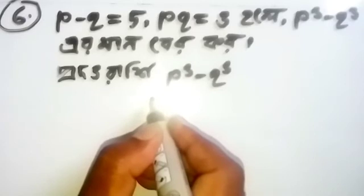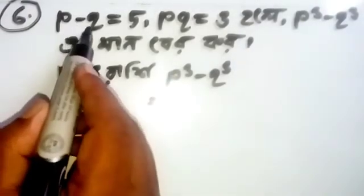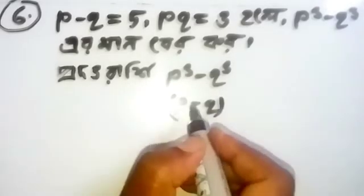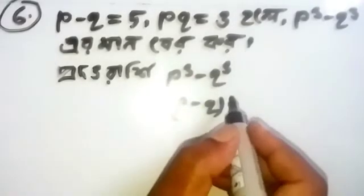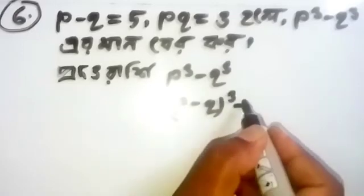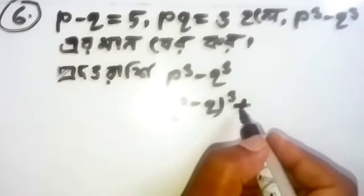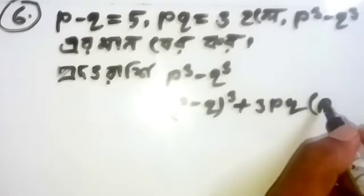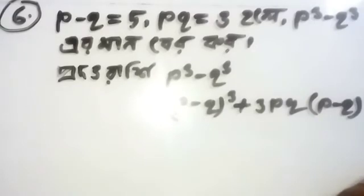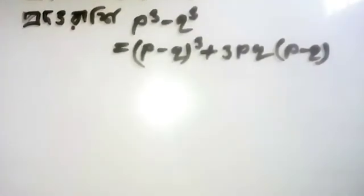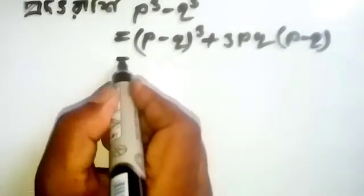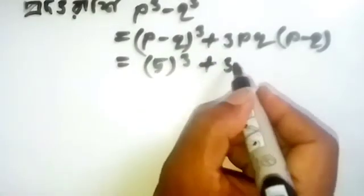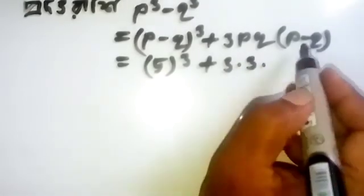So the formula for a cubed minus b cubed: p minus q whole cubed. The formula gives us p minus q whole squared plus among the hobby economic terms. We apply: p cubed minus q cubed equals p minus q, whole cubed, plus 3pq into p minus q. We show that p minus q equals 5.